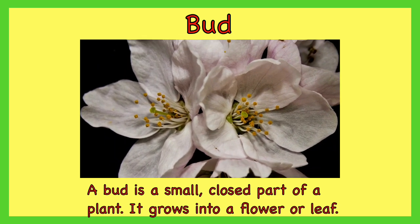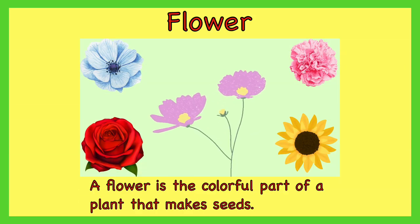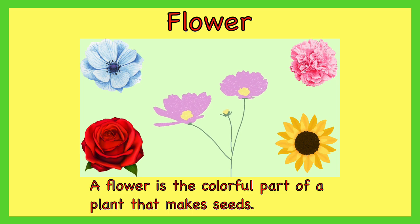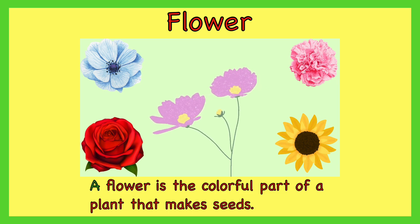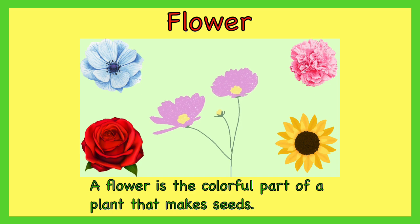Bud. A bud is a small, closed part of a plant. It grows into a flower or leaf. Flower. A flower is the colorful part of a plant that makes seeds.